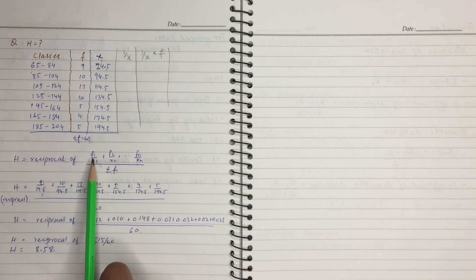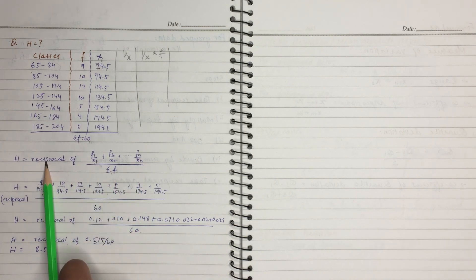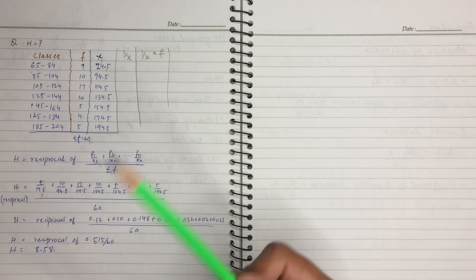Now the reciprocal of this is 8.58, which is the harmonic mean. First of all, frequency, we take the reciprocal, multiply frequency, divide sum of frequency, and that is it about the harmonic mean.